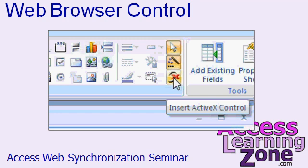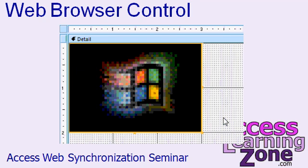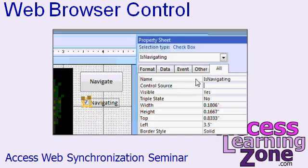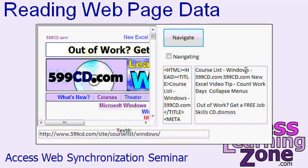In the first lesson, you'll learn about the web browser control, how to insert it into your Access forms, and how to use it to create your own little web browser right inside of Access. We'll add functionality like a URL address and the ability to tell whether the web browser control is currently navigating. Next, we'll learn how to analyze that web page and read the HTML code from it, as well as read all the page text that comes from that web page. This is how we can get data off the web page.